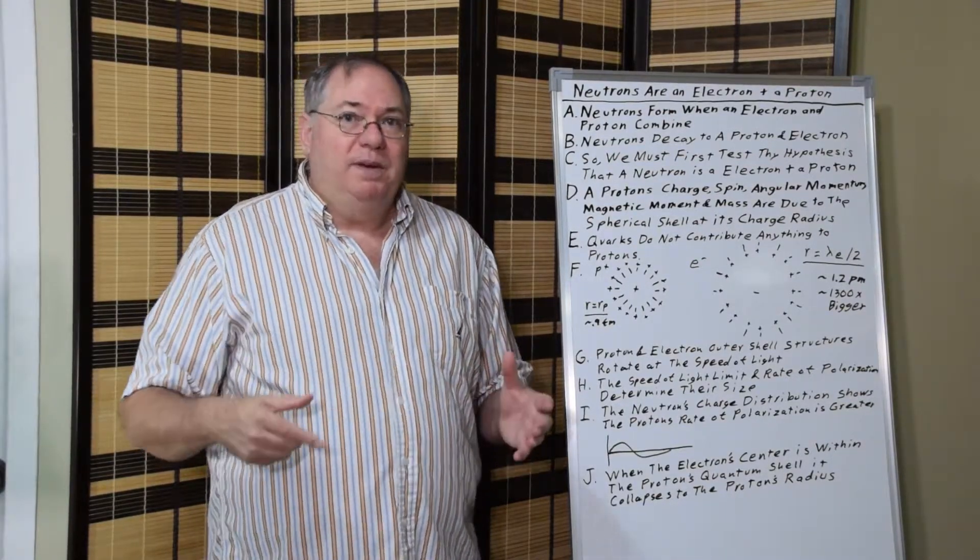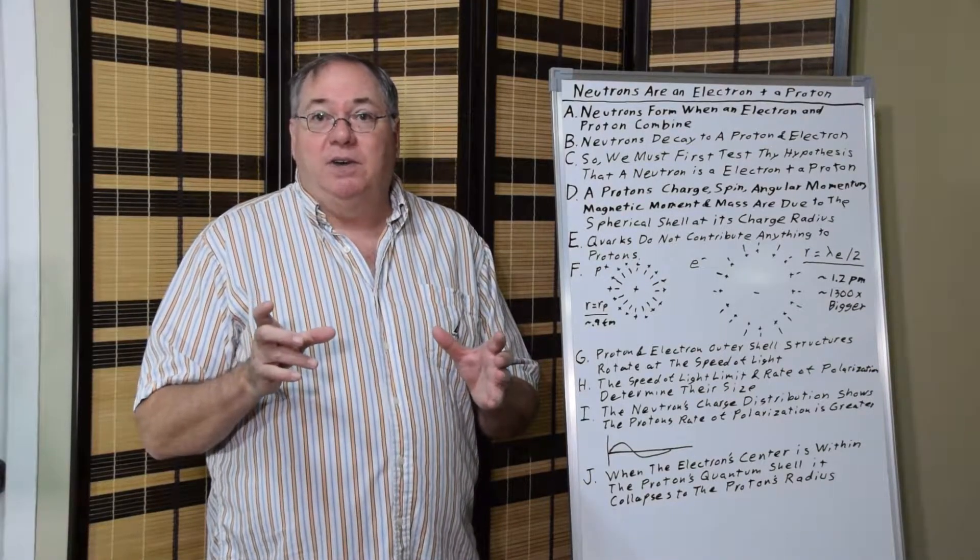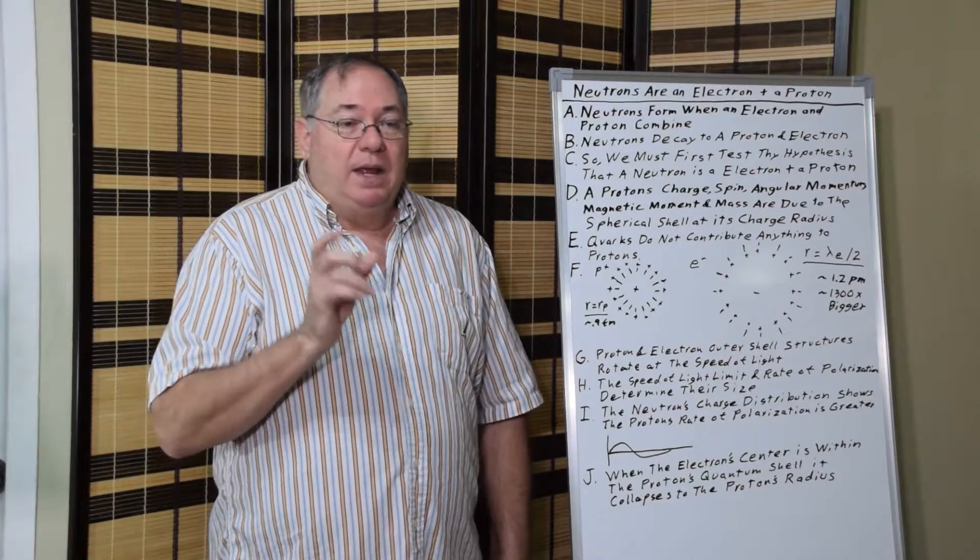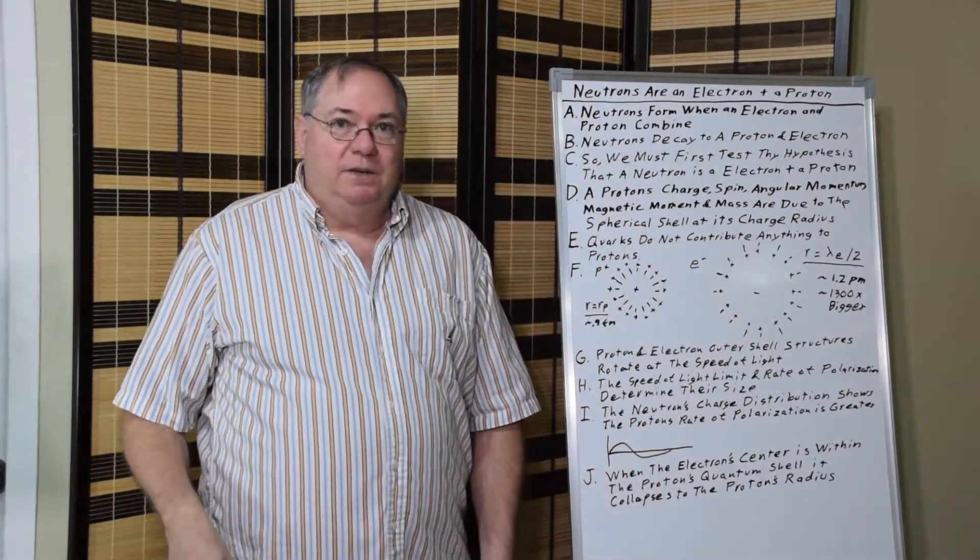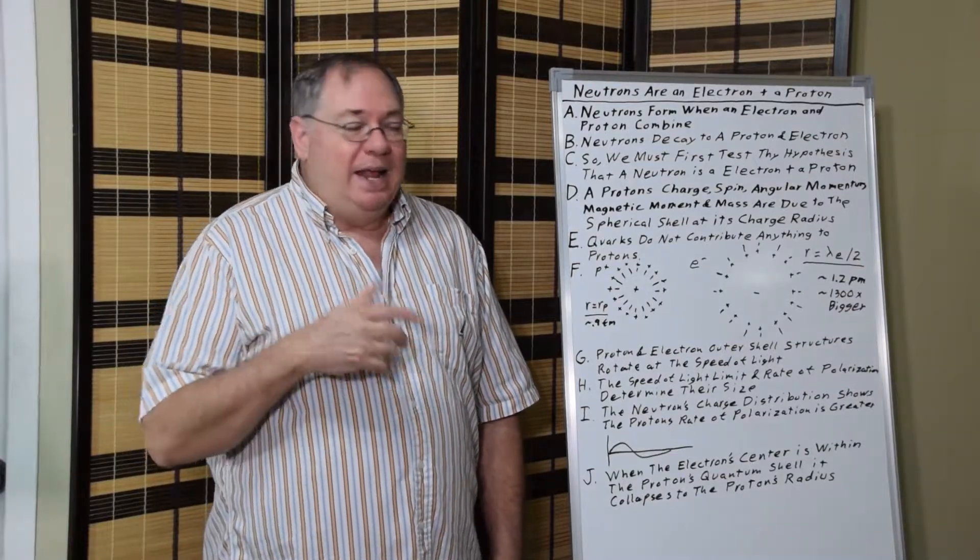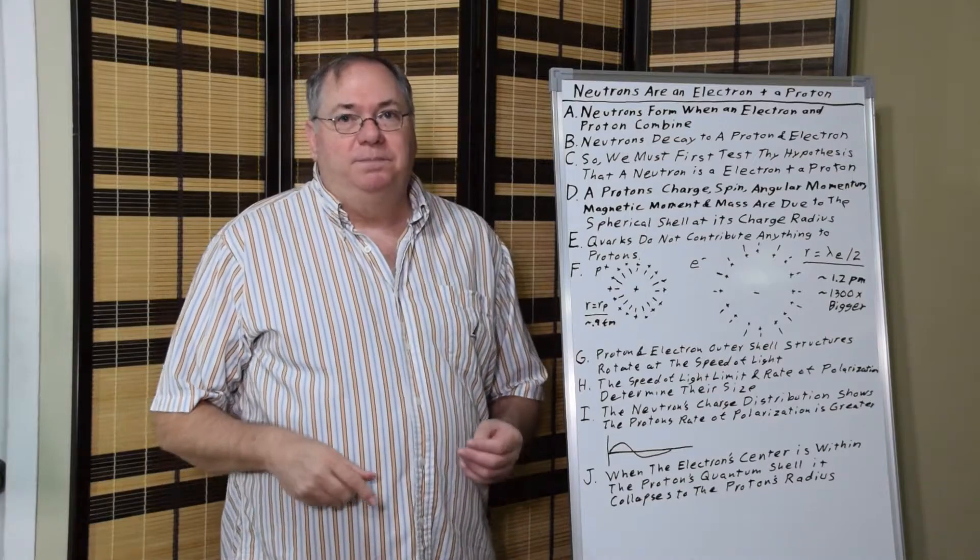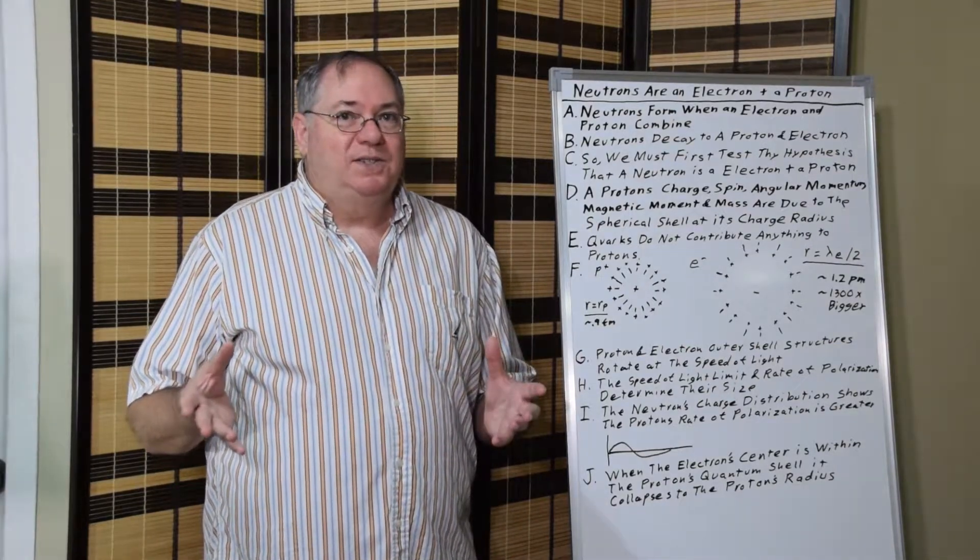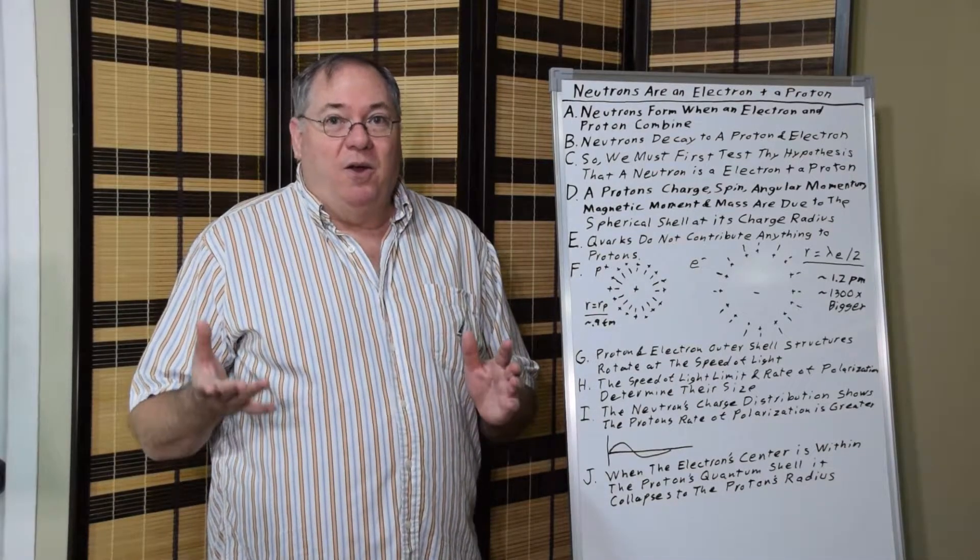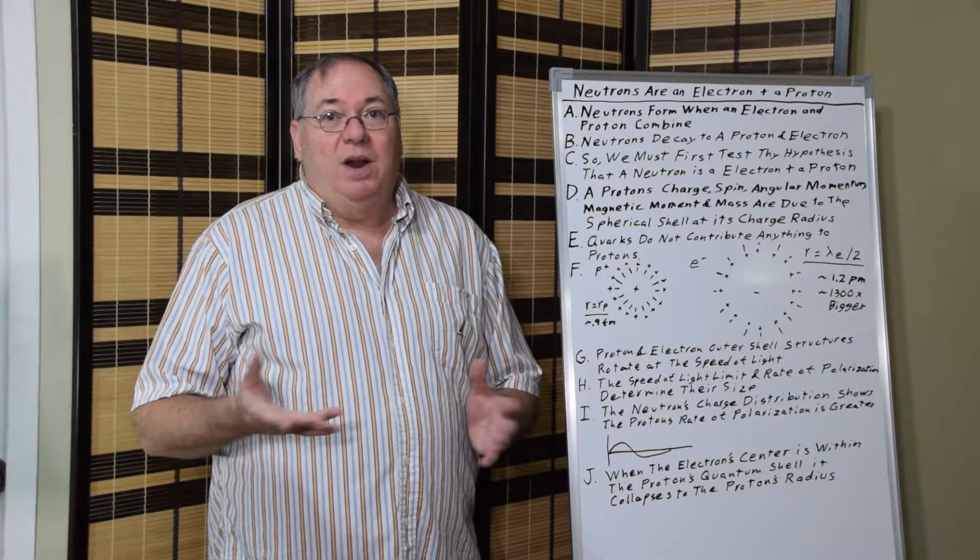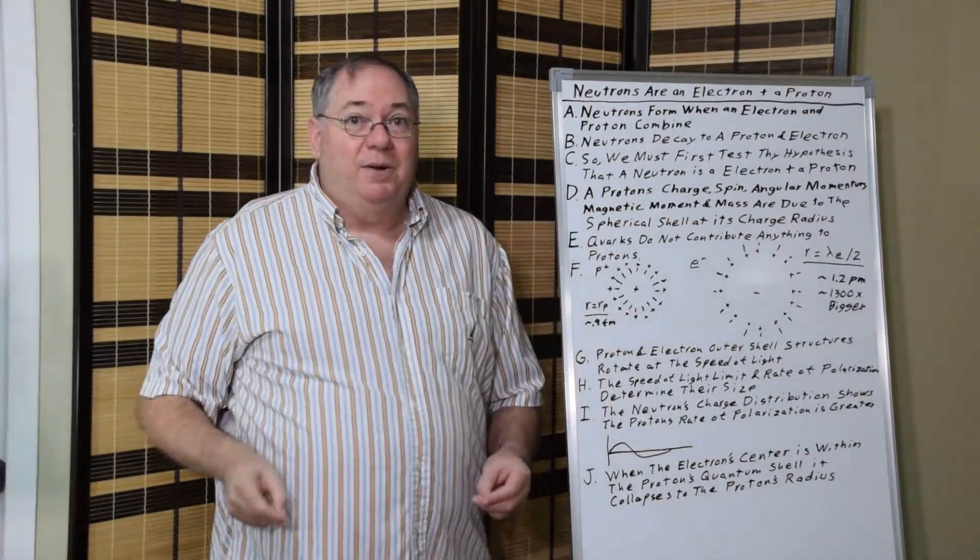And I've discussed this in previous videos, how a quantum fluctuation, electron-positron fluctuation, can allow an electron to jump into the proton to form a neutron. And then that can be reversed, so the electron can jump out of the neutron. You don't need any fancy process. You don't need W and Z bosons to do that. All you need is the quantum fluctuation, electron-positron, or maybe an antiproton.